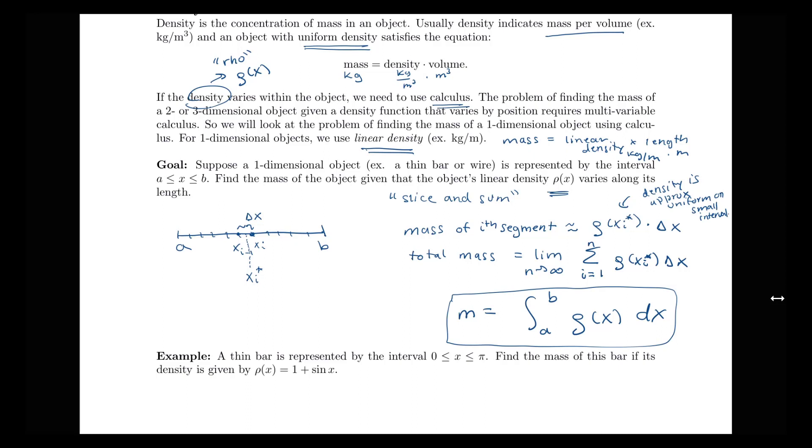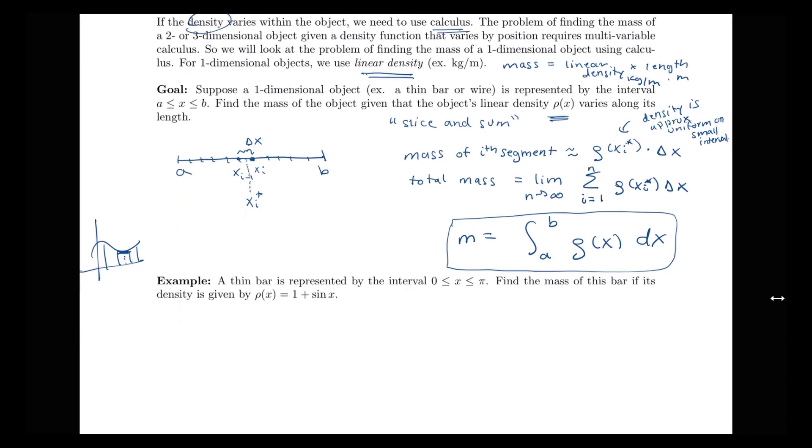Just like when we talked about finding the area of a region under the curve, and we would take our region here, we divided it up into all these little rectangular regions. And we would say the height is approximately constant at some sample point over the region. So that slice and sum idea is the same thing we're applying here. So let's use this formula in one example.